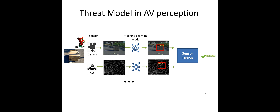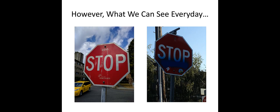First, let's look at the vulnerability of camera sensors. Here are examples of stop signs taken from the real world — one from Vancouver and one from Berkeley. We can see that in the real world there are a lot of graffiti and random patterns on stop signs. This makes us think: what if these random patterns are adversarial, and whether we can generate robust physical attacks under different physical conditions that can consistently fool a machine learning model potentially equipped in an autonomous driving vehicle.